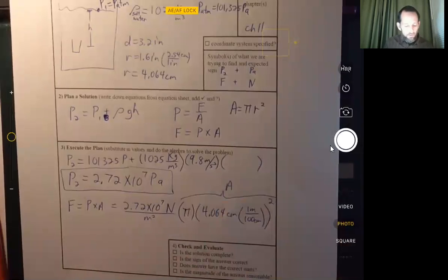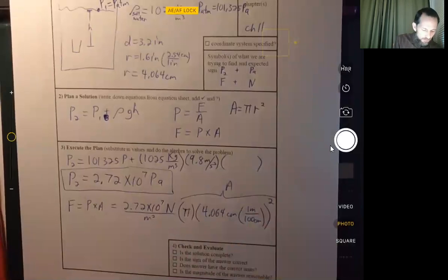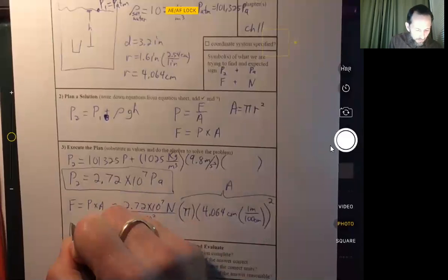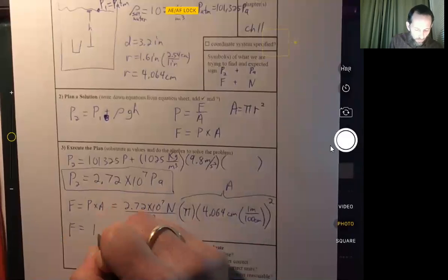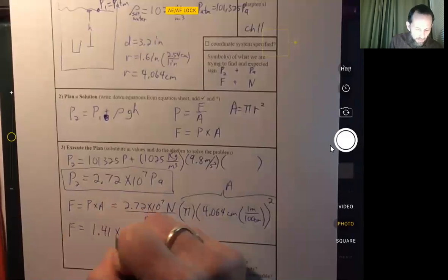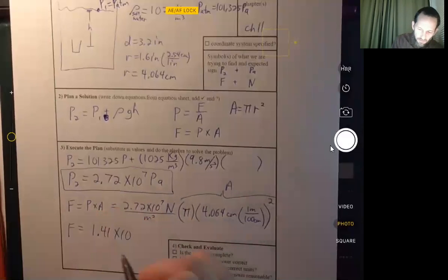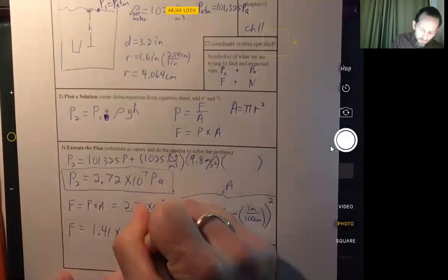And so now we can fill that in. We get 2.72 times 10 to the seventh times pi times 4.064 divided by 100. Make sure that's in parentheses, or you can do it ahead of time. And so that comes out to be 1.41 times 10 to the fifth newtons.